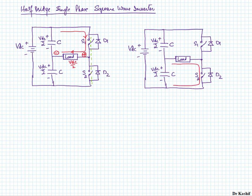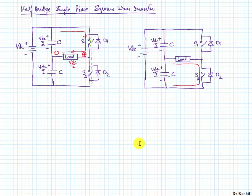You cannot turn on switches S1 and S2 together, because if both switches are on simultaneously and we consider them ideal, the DC supply will be short-circuited. When applying gate pulses to S1 and S2 there must be a gap between them so that there is no short-circuiting of the DC source.